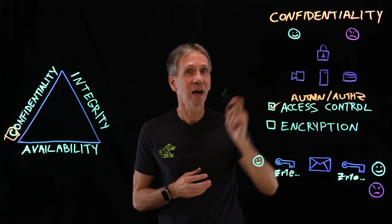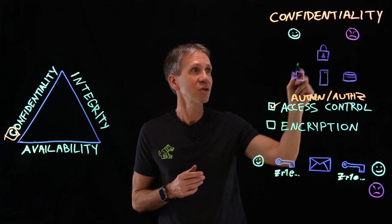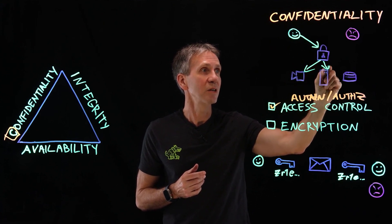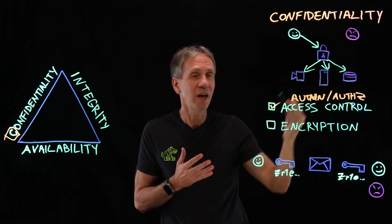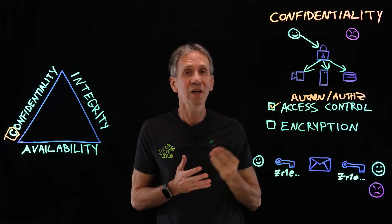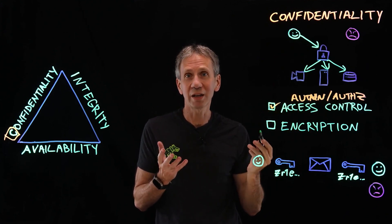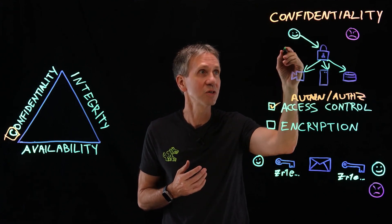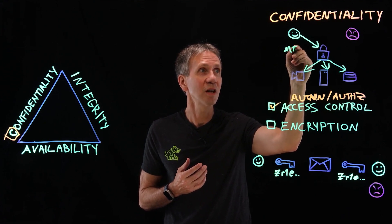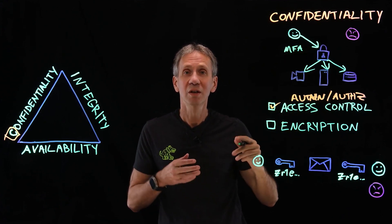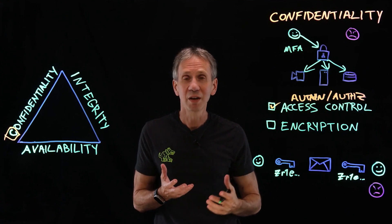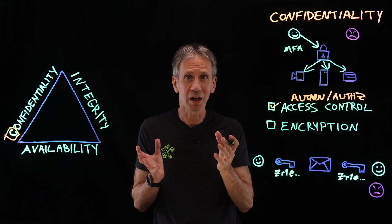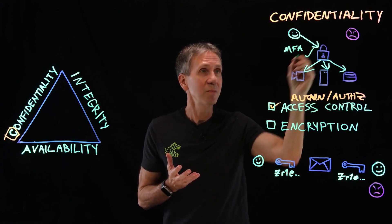Let's say we've got an authorized user who is going to try to access something — it could be some IoT device, a database, or a server. He comes in and we check to see if he is in fact who he claims to be — the authentication step. We might use multi-factor authentication, where he proves who he is by something he knows, something he has, something he is, used in combination. If he's able to do that, we allow him in.